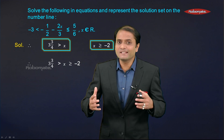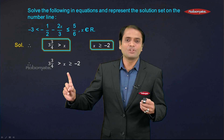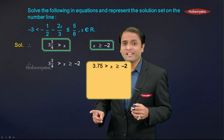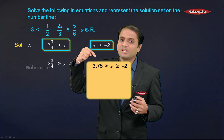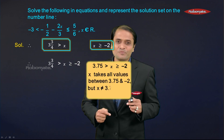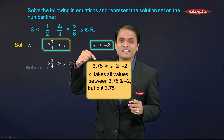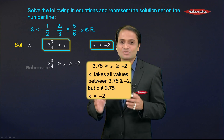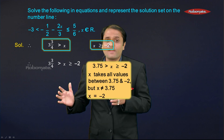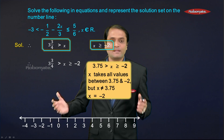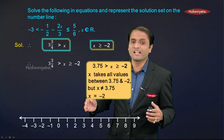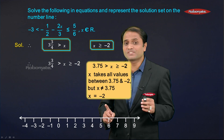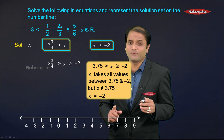Next, we represent this solution on the number line. Since x belongs to real numbers, x takes all real values between 3.75 and −2. Note that 3.75 is not included in this range, but −2 is included. Draw a number line with numbers marked at equal distances and identify the two endpoints.